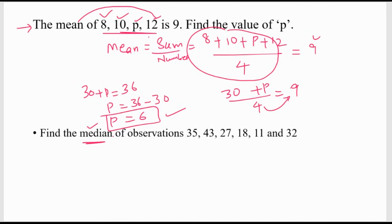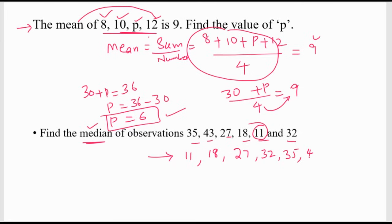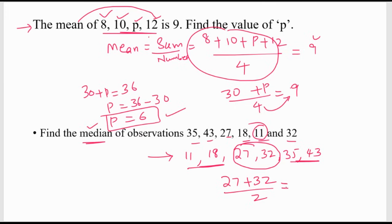Find the median of the observations: 35, 43, 27, 18, 11, 32. Median means the middle number, but you must first arrange in ascending order: 11, 18, 27, 32, 35, 43. The middle number is not a single value here since there are an even number of observations. These two — 27 and 32 — are the medians, so take their average: 27 plus 32 by 2 equals 59 by 2, which is 29.5. The median of these observations is 29.5.